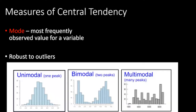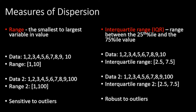The mode is the most frequently observed value for any variable — it's also extremely robust to outliers, though we report it less often in clinical practice. You can have a unimodal distribution, bimodal distribution, or multimodal distributions.